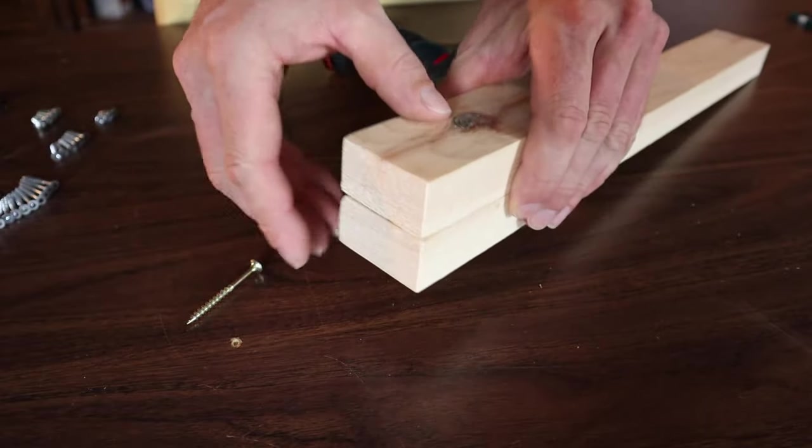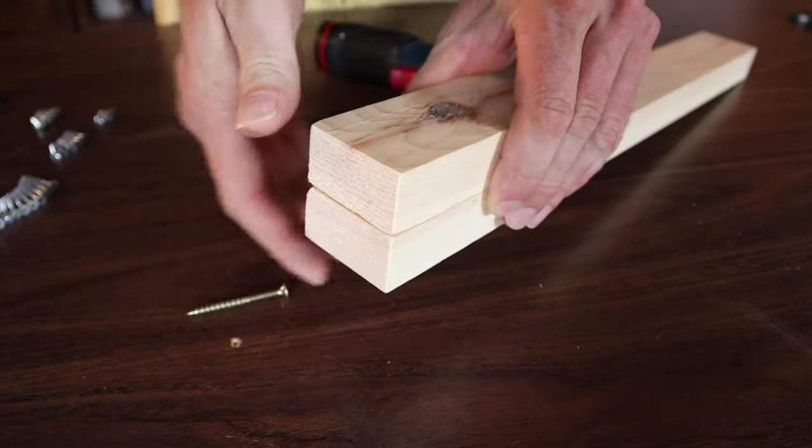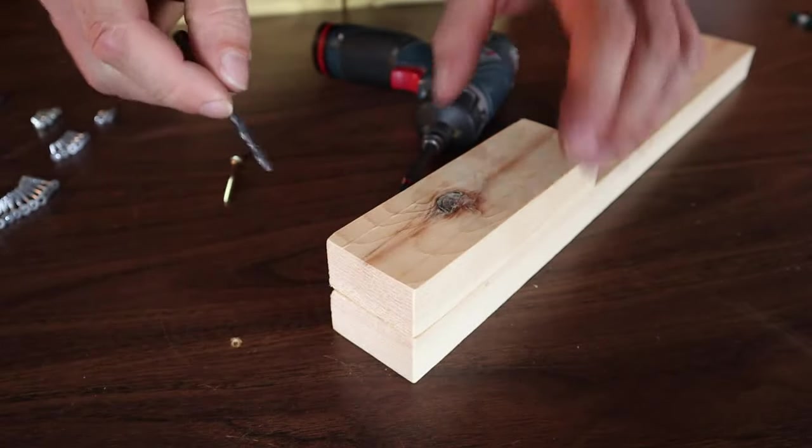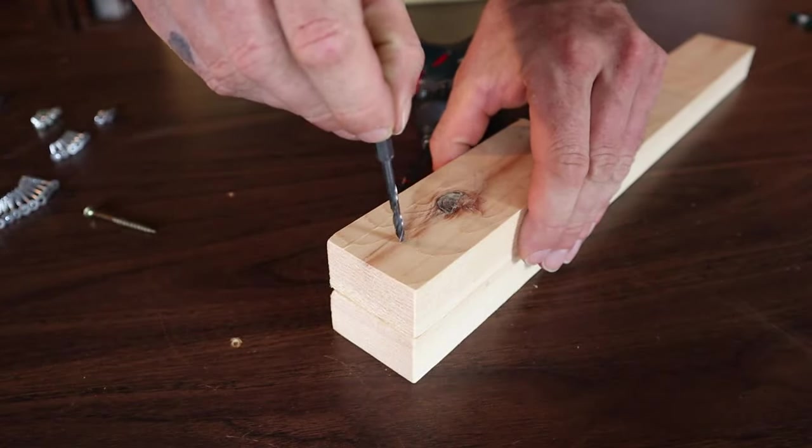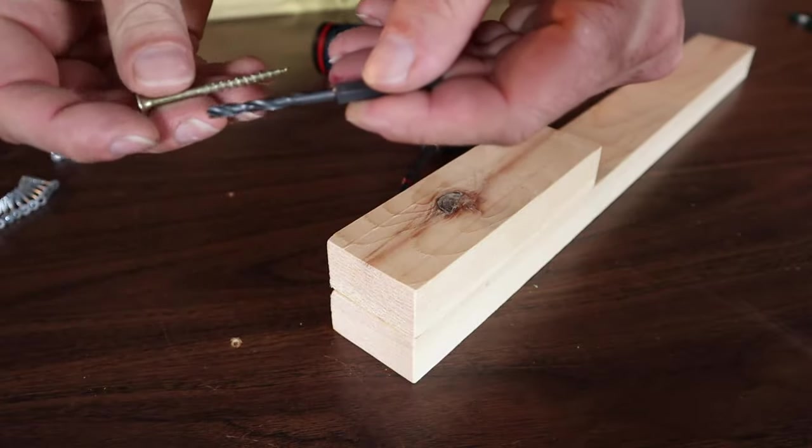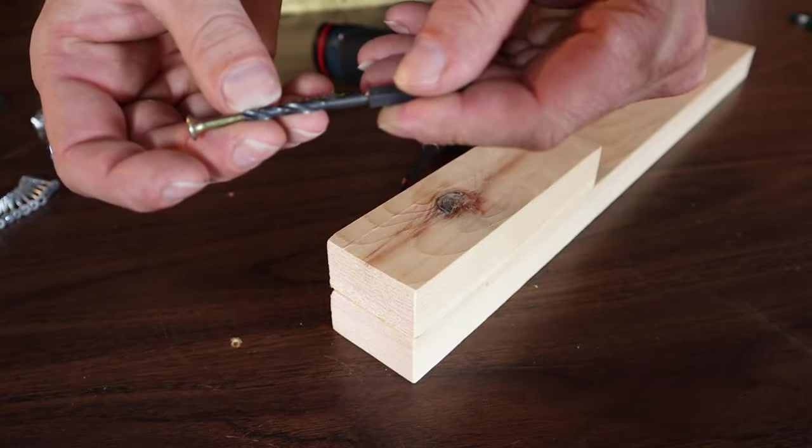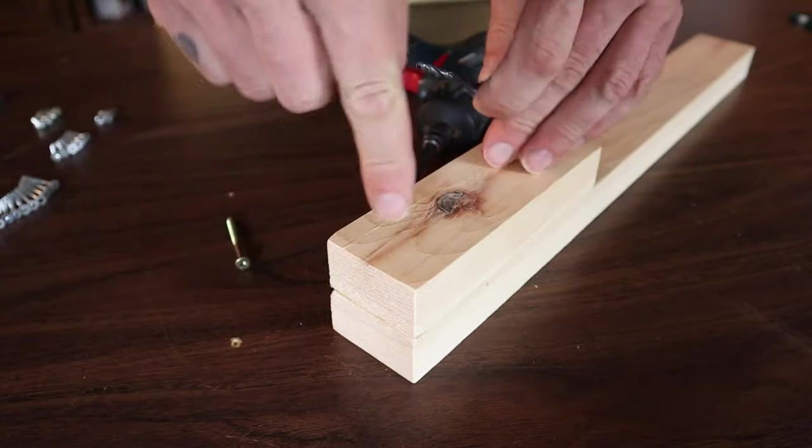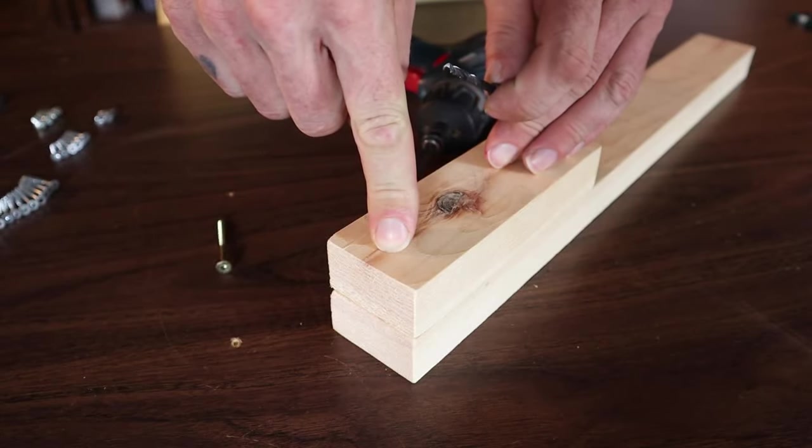And if you've run into the situation where when you screw two pieces together and they separate, another way to prevent that is to drill a pilot hole in the first piece. To do that, you just get a drill bit where the drill bit size is the same as the shank of the screw, so the diameter of the drill is the same as the smooth part of the screw. Then you drill into the first piece and I'll show you how to do that now.